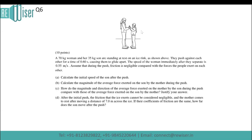Question 6: a 70 kg woman and her 35 kg son are standing at rest on an ice rink. They push against each other for a time of 0.60 seconds, causing them to glide apart. The speed of the woman immediately after they separate is 0.55 meters per second. Assume friction is negligible compared with the forces the people exert on each other. Calculate the initial speed of the son after the push.